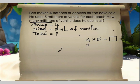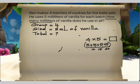Let me draw four groups of five: five plus five plus five plus five. We know that five plus five is ten, ten plus five is fifteen, and fifteen plus five is twenty. So four times five makes twenty.